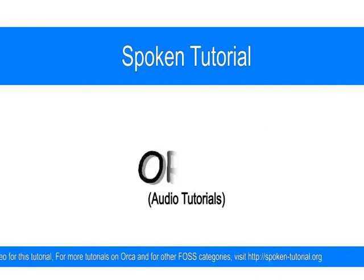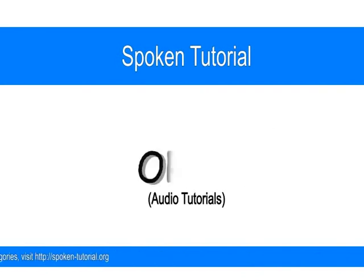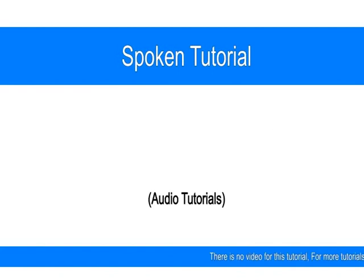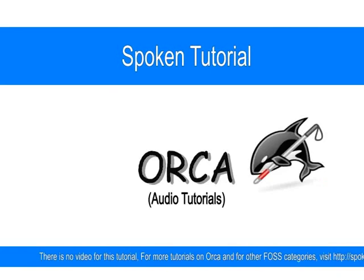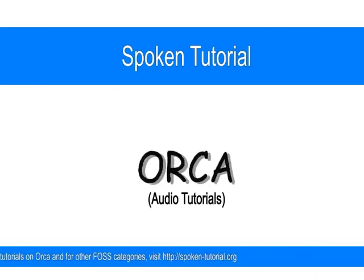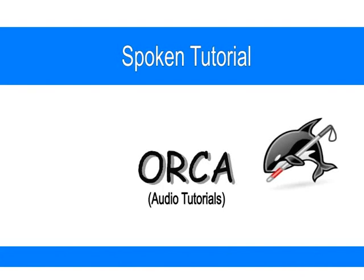Let's close the text editor now. Press Alt plus F4 to close this file. Note that in almost all software, you can use the Alt plus F4 key combination to close an application window. So that's all for this tutorial. I hope you can already feel how powerful and rich the screen reader is. Till the next tutorial, this is Ankita Shanbhag and Krishnagant Mane saying goodbye and have fun.